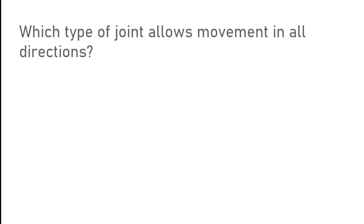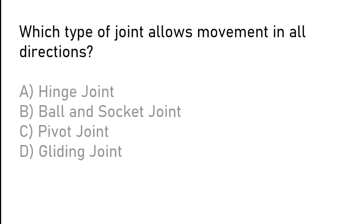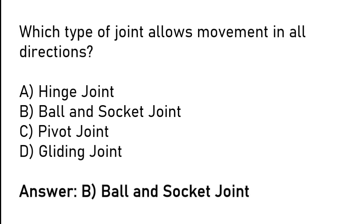Which type of joint allows movement in all directions? Hinge joint, ball and socket joint, pivot joint, or gliding joint. The correct answer is option B: ball and socket joint is a type of joint which allows movement in all directions.